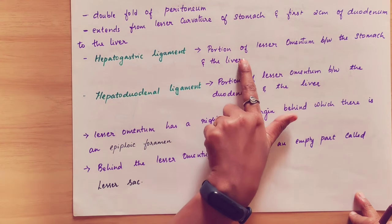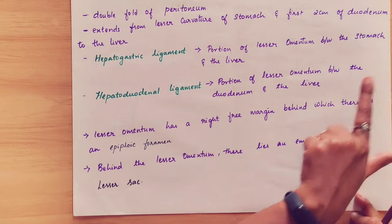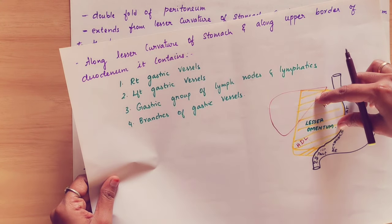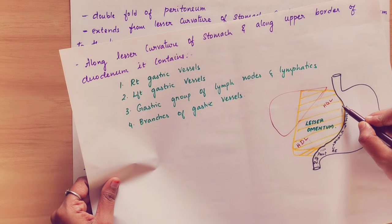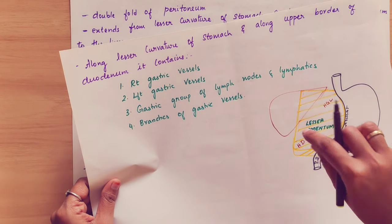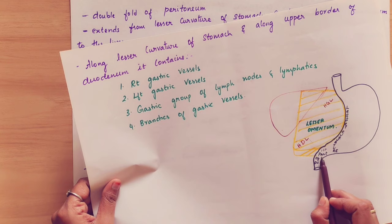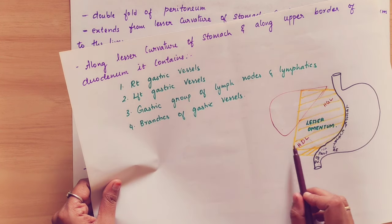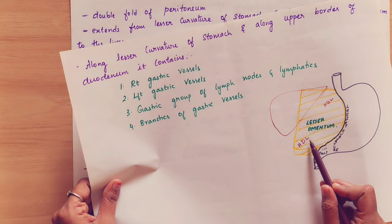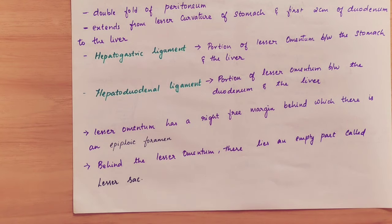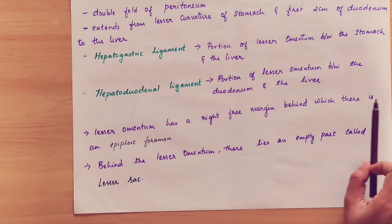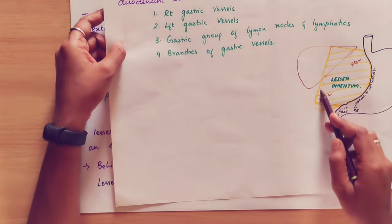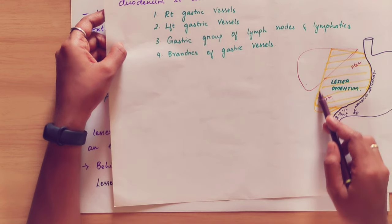This double layer of peritoneum has two named parts. The hepato-gastric ligament is the portion of the lesser omentum between the stomach and the liver. The part of the lesser omentum connecting to the duodenum is called the hepato-duodenal ligament. There is a right free margin, behind which there is an epiploic foramen.